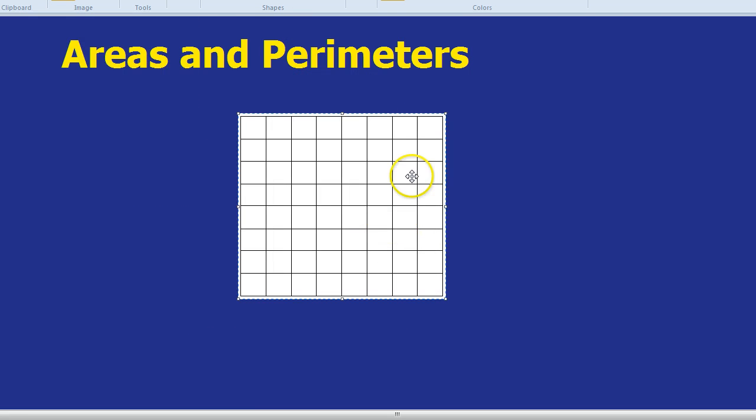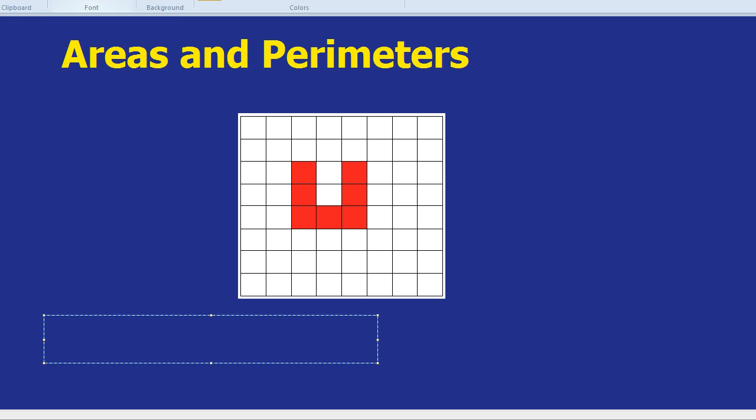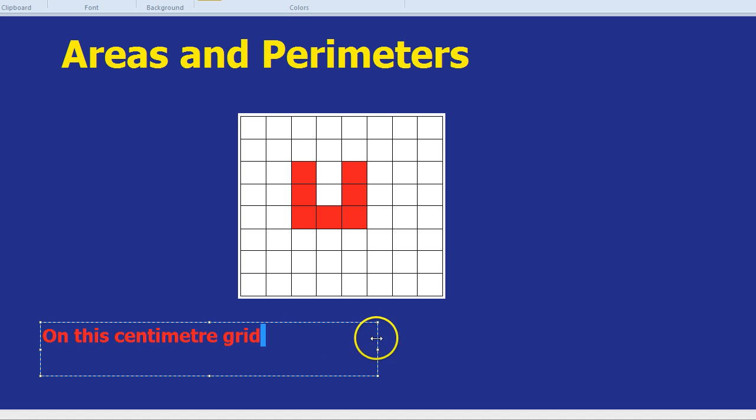If we had a grid like this, and a shape filled in like so, and we were asked to find the area and the perimeter of that shape, and we were also told that it was a centimetre grid, as in every one line is one centimetre. So on this centimetre grid, find the area and the perimeter of the shape.